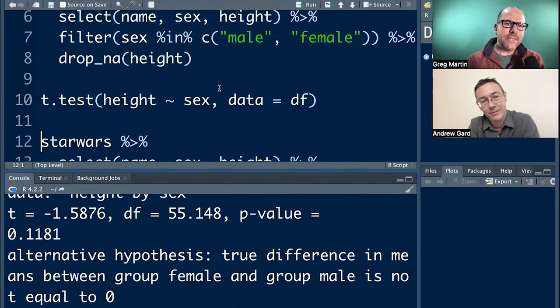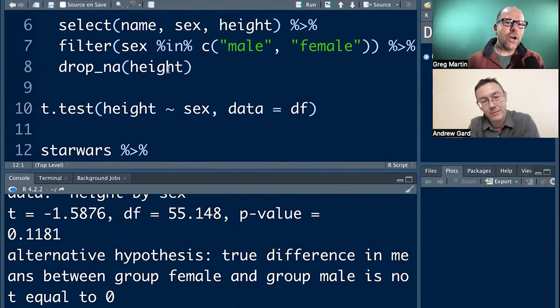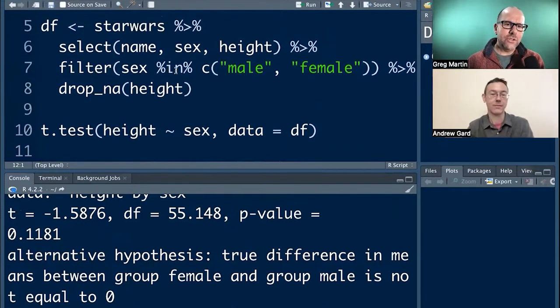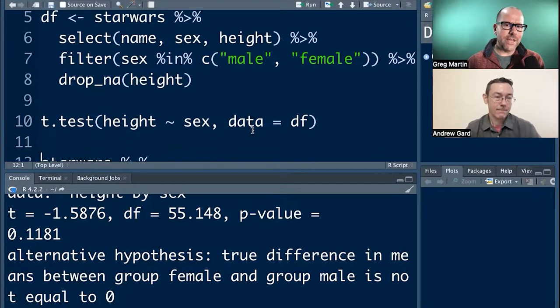But the point here is you can't pipe straight from drop NA height, pipe that straight into t.test, because when you pipe data, it expects the data object to be the first argument in the next function. And the t-test wants to see the data object or the data right at the end. It's the last argument. So how do we fix that? Here we go.